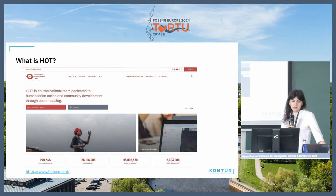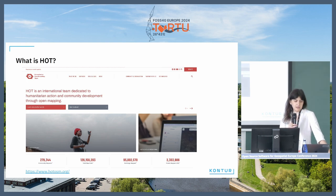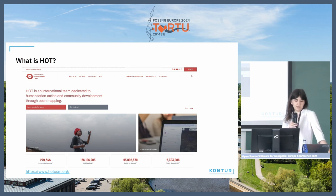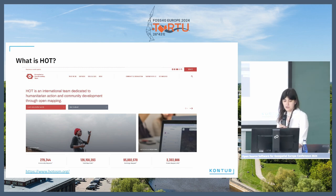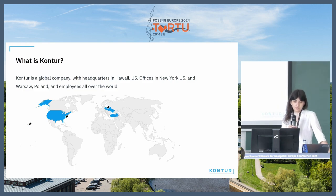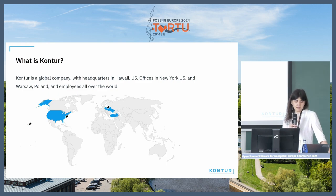HOT collaborates with various organizations including NGOs, governments, companies, and local communities to improve mapping data and enhance humanitarian aid — including the company I work for, Kontur. Kontur is a global geospatial data and real-time risk management provider for many organizations, and we mainly work in disaster management.